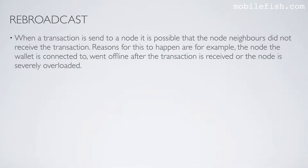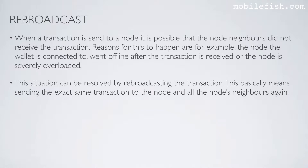When a transaction is sent to a node it is possible that the node neighbors did not receive the transaction. Reasons for this to happen are for example the node the wallet is connected to went offline after the transaction is received, or the node is severely overloaded. This situation can be resolved by rebroadcasting the transaction, which basically means sending the exact same transaction to the node and all the node's neighbors again.